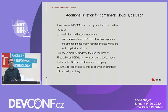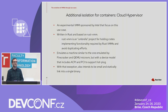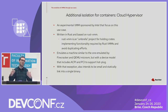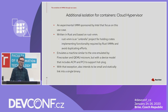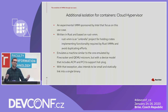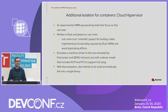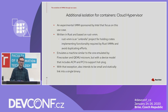The second VMM for container isolation is Cloud Hypervisor, an experimental VMM sponsored by Intel for this particular use case. It's also written in Rust and based on Rust-VMM, which is an umbrella project for holding crates implementing functionality required by Rust-based VMMs — basically a way for Firecracker, Cloud Hypervisor, and potentially other Rust VMMs to share code and avoid duplicating efforts. It emulates a machine similar to Firecracker and QEMU micro VM, but with a device model that includes ACPI and PCI to support hotplug.